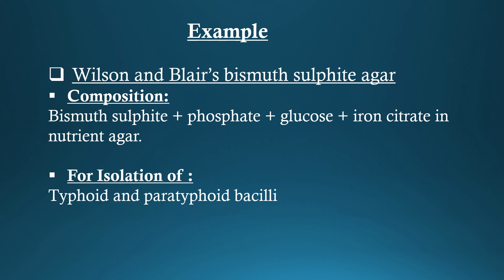Example: Wilson & Blair's Bismuth Sulphite Agar. Composition: Bismuth Sulphite, Phosphate, Glucose, Iron Citrate in Nutrient Agar — for isolation of Typhoid and Paratyphoid Bacillus.